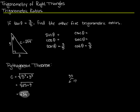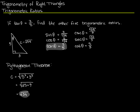Now I have a third side — the hypotenuse is root 34. Sine is opposite over hypotenuse: 3 over root 34. Cosine is adjacent over hypotenuse: 5 over root 34. Then I can flip these over to get secant and cosecant. I was given the tangent, and from that, with the Pythagorean theorem, I was able to find all five of the other trigonometric ratios.